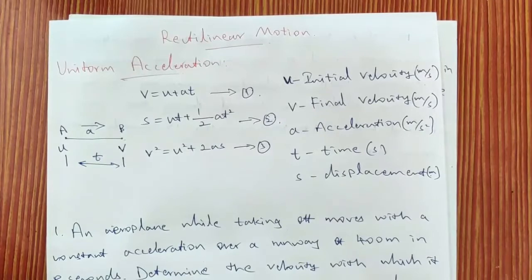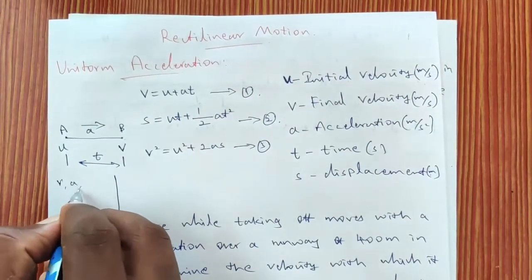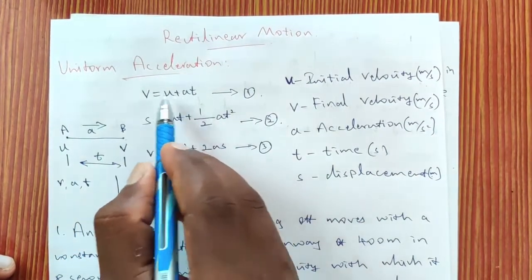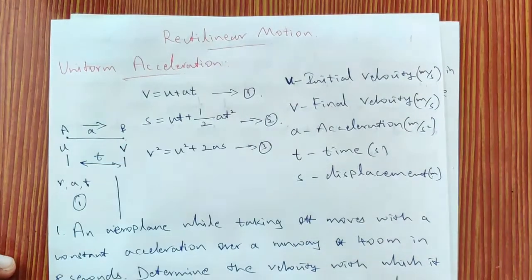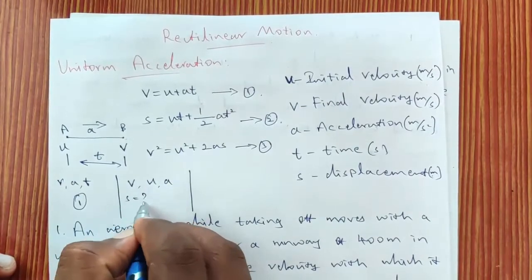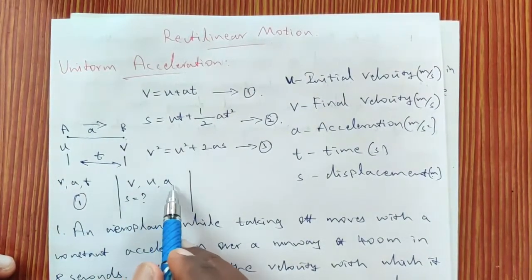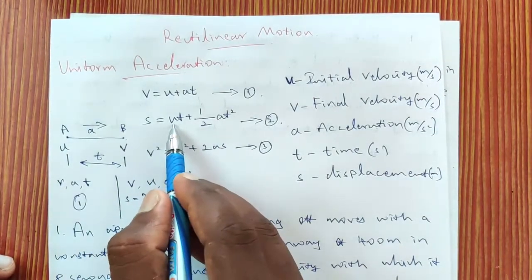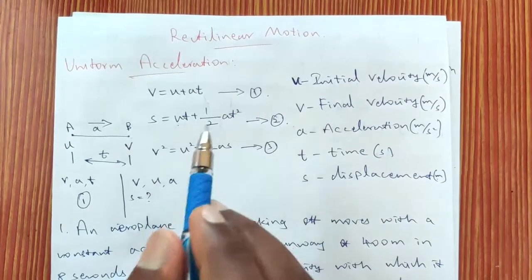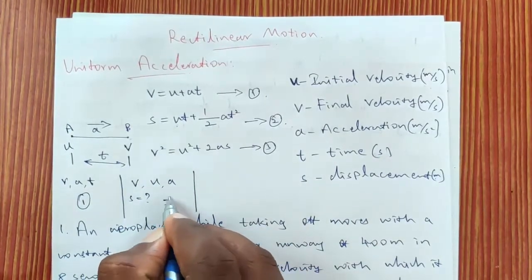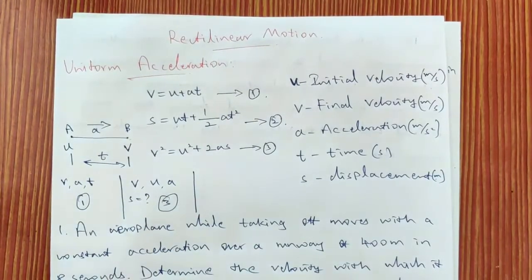You have to use these three equations to calculate displacement, acceleration and velocity based on the known and unknown variables. For example, if v, a and t are given and you need to find u, use equation 1. If v, u and a are given and you need to find s, equation 1 won't work, equation 2 has two unknowns, but equation 3 gives s directly. So you must select equations accordingly.